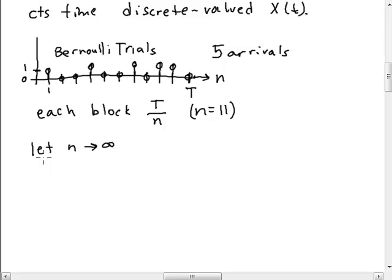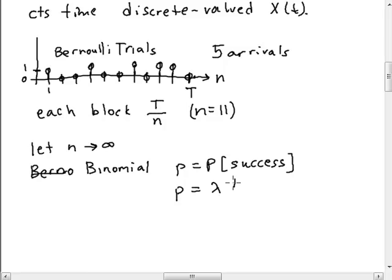In terms of the binomial, here's what's going to happen. The binomial has a particular probability of success. This probability equals the probability of success in any given block. Well, as I let n go to infinity, this p is going to go to 0 because I've got an infinitely small amount of time. But what I'm going to say is that p is equal to λ times t over n.